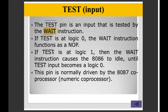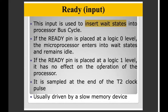Now I have to give TEST pin 1. Then we have to check the wait status. When the TEST pin is 0, we remain in the wait state. Then I have to give TEST pin 1 again — this is TEST pin 2. When we stop the wait state, I have to give TEST pin 2. When I get 0, I will show you the wait state.